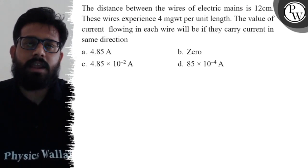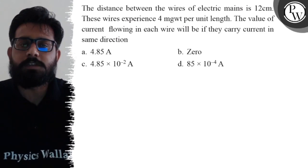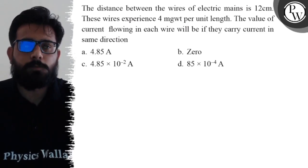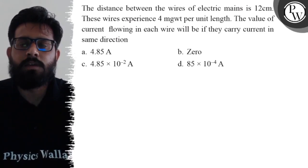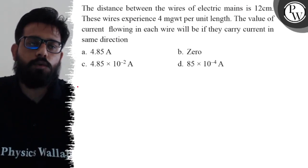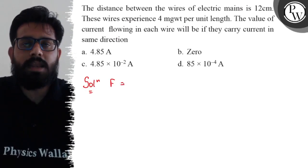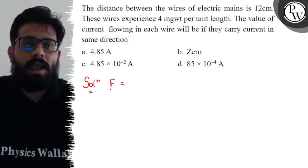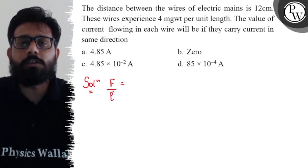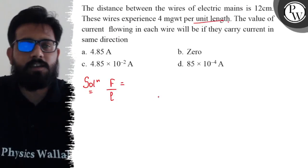Your first option is 4.85 A, second option is zero, third option is 4.85 × 10^-2 A, and fourth option is 85 × 10^-4 A. So here you have the value of force as 4 milligram-weight per unit length. Actually, this is the value of force per unit length, F/L.